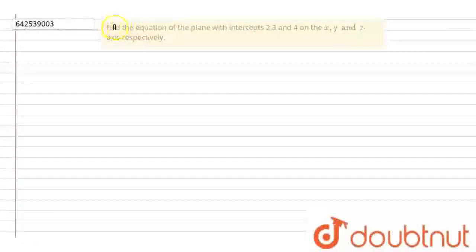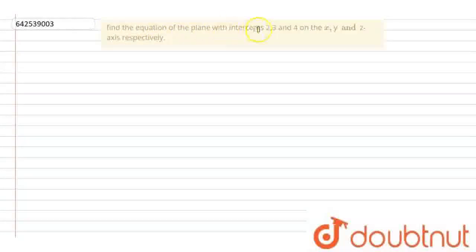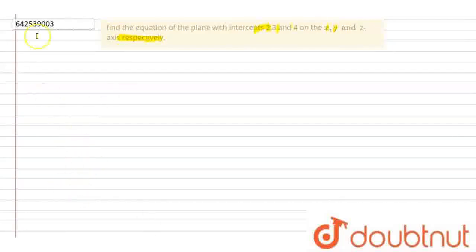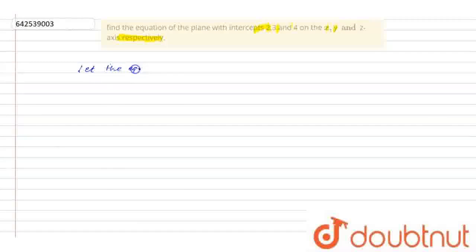The question says find the equation of the plane with intercepts 2, 3 and 4 on the x, y and z axes. So, the equation of the plane is x upon a plus y upon b plus z upon c is equal to 1.